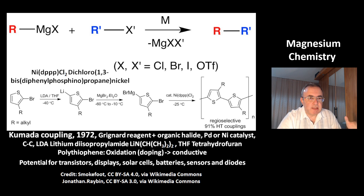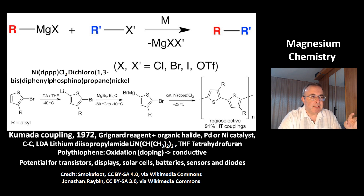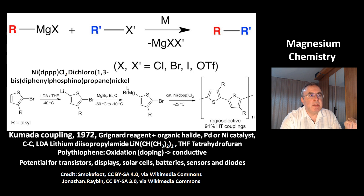At the bottom there is a nice example called the Kumada coupling, found in 1972. It starts with a bromothiophene compound. At low temperatures with LDA (lithium diisopropyl amide) and THF (tetrahydrofuran) as solvent, you get an organolithium compound. Then with magnesium bromide and ether, you get the Grignard reagent.